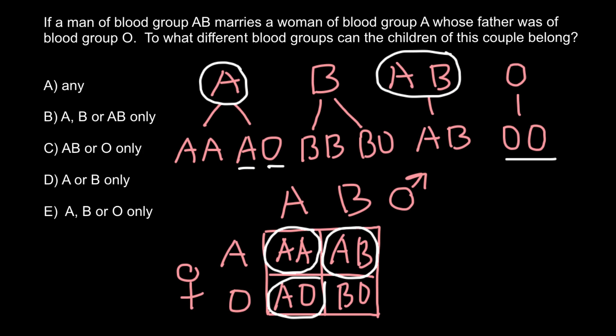And the last one, blood group BO. This is the genotype and the phenotype is blood group B. So as you see in the progeny, the progeny phenotypes A, B and AB are possible, and this is answer B. So blood group A, B and AB.